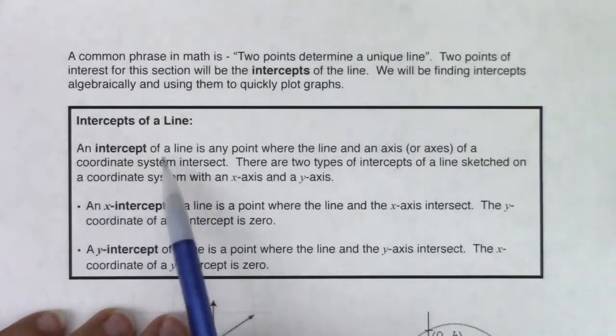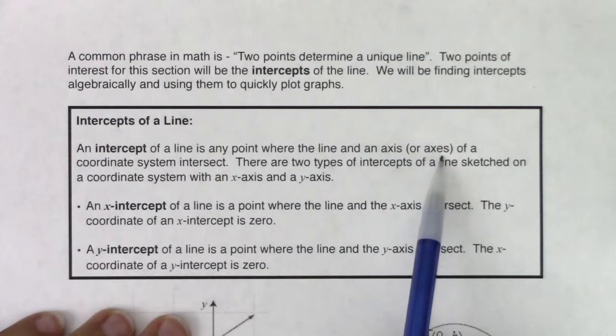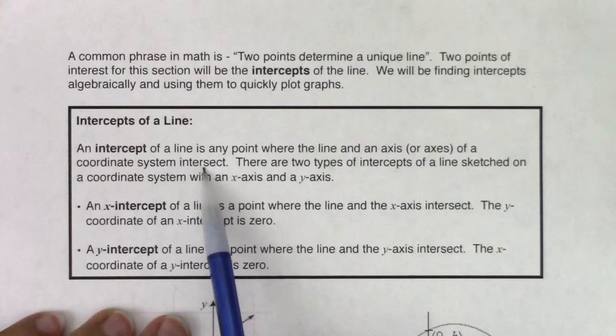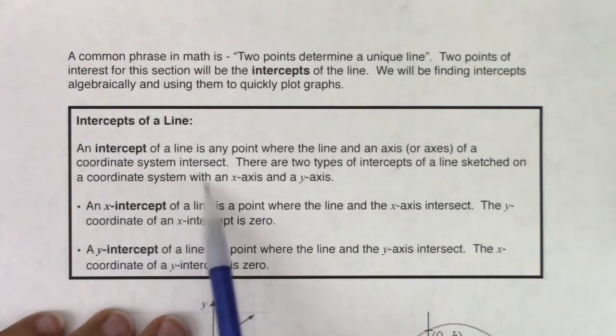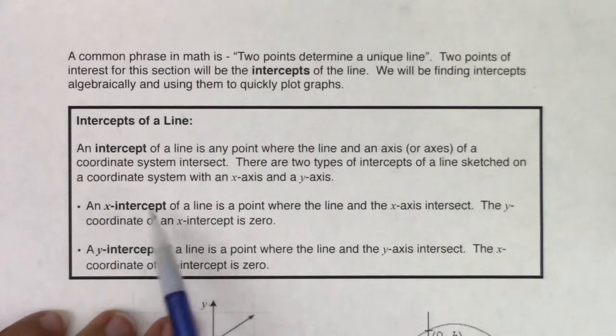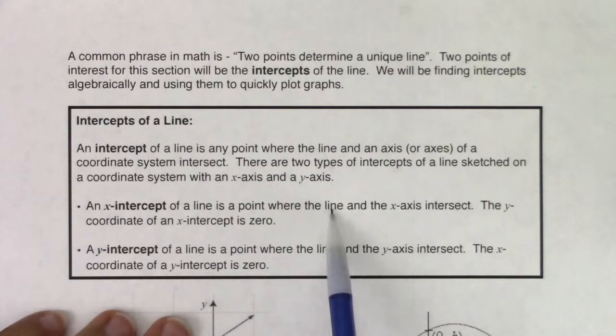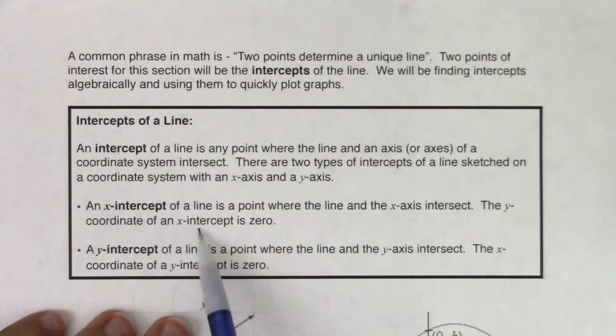An intercept of a line is any point where the line and an axis, or potentially axes, of the coordinate system intersect. There are two types of intercepts of a line sketched on the coordinate system with an x-axis and a y-axis. An x-intercept of a line is a point where the line and the x-axis intersect. The y-coordinate of the x-intercept is zero. The y-value on the x-intercept is zero. The opposite letter is zeroed out.